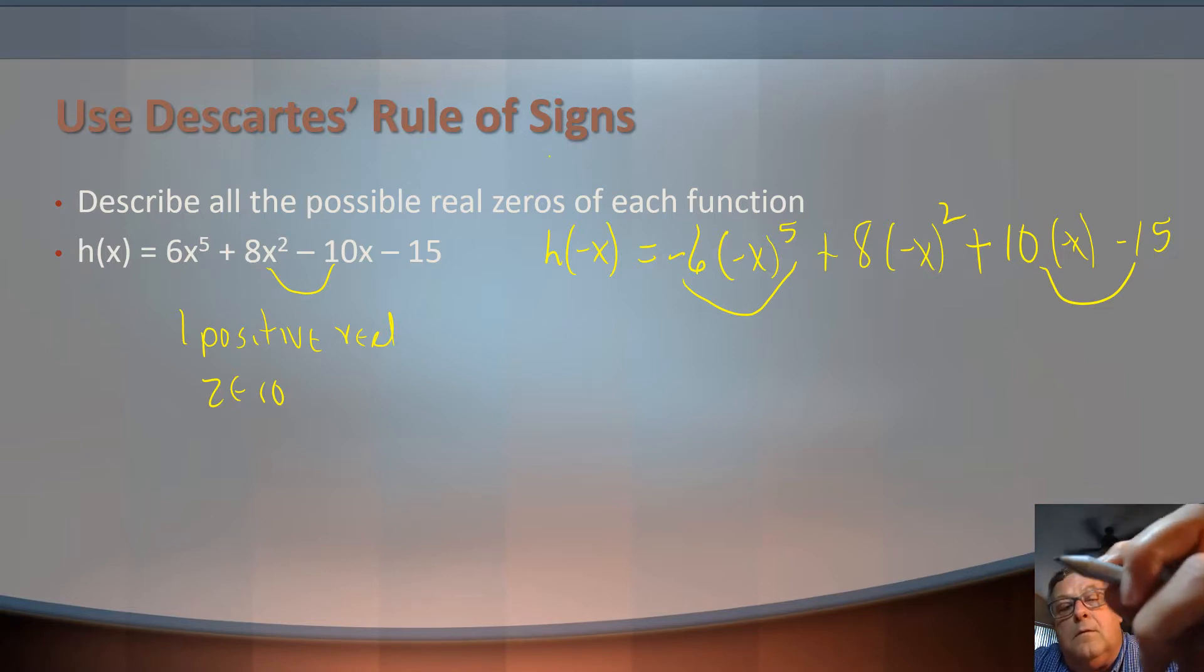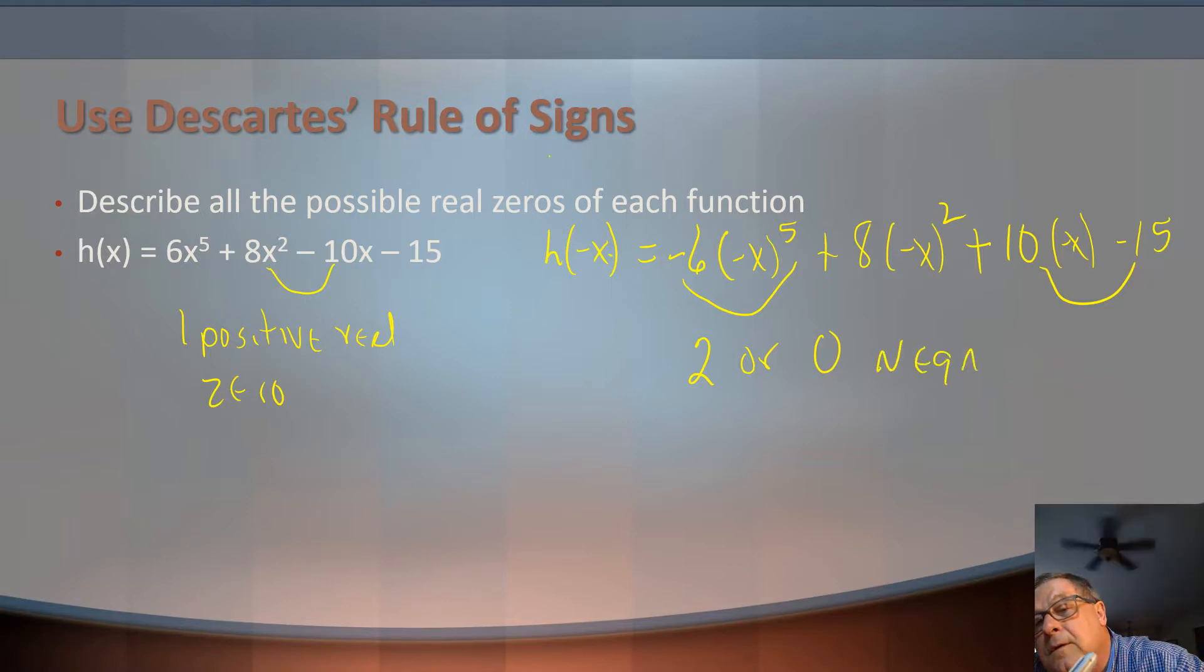We look at the sign changes, and if it's a number 2 or greater, then it's either that or something decreased by 2. Here, since we have two sign changes, we could say that we've got 2 or 0, notice how I could reduce that by 2, negative real zeros.